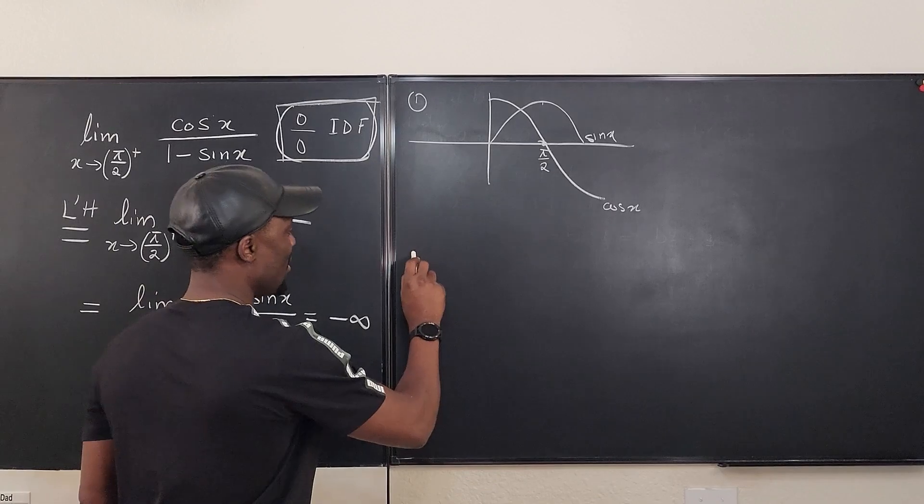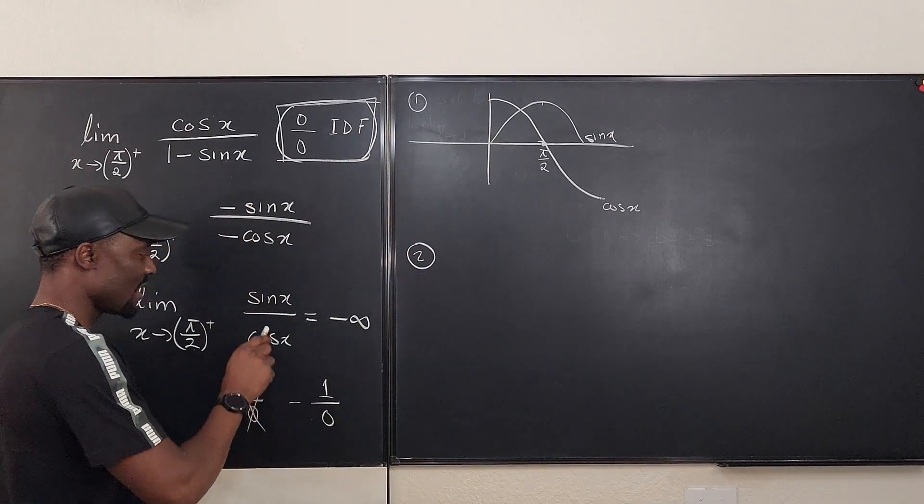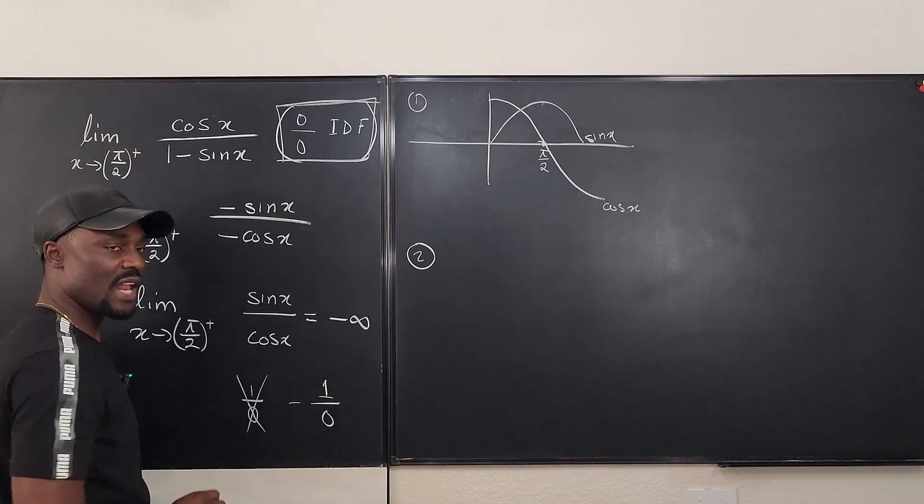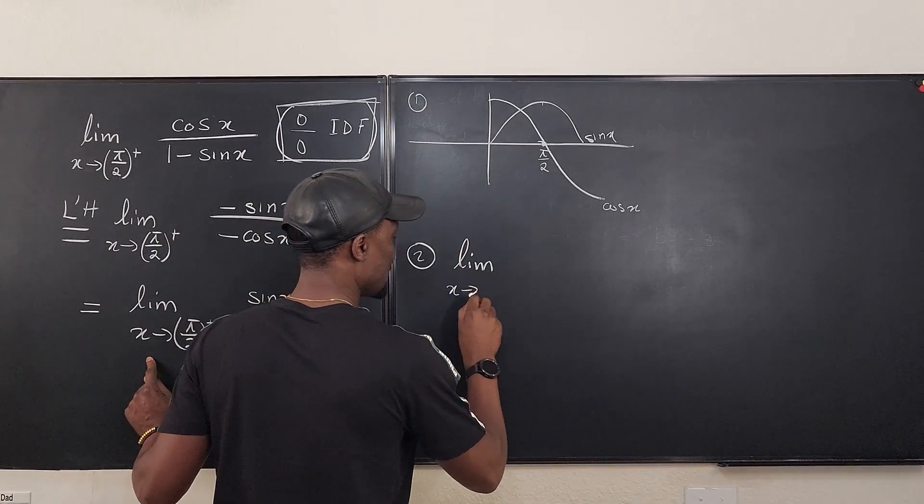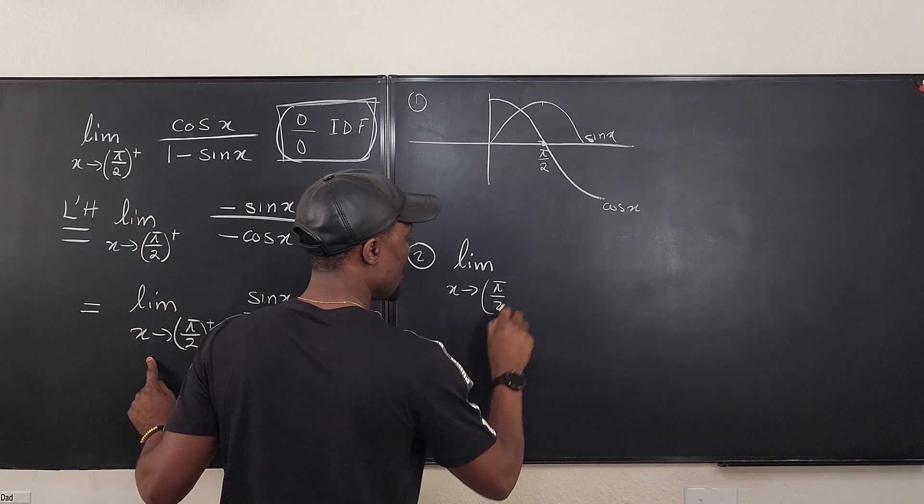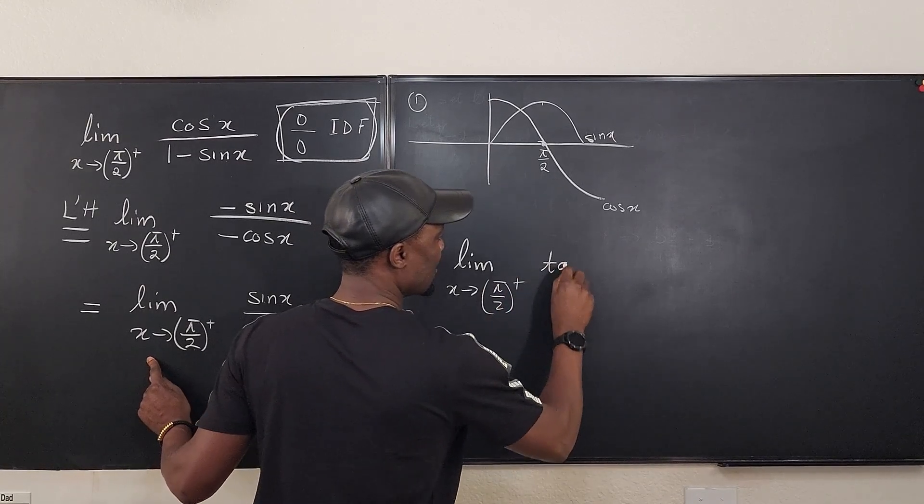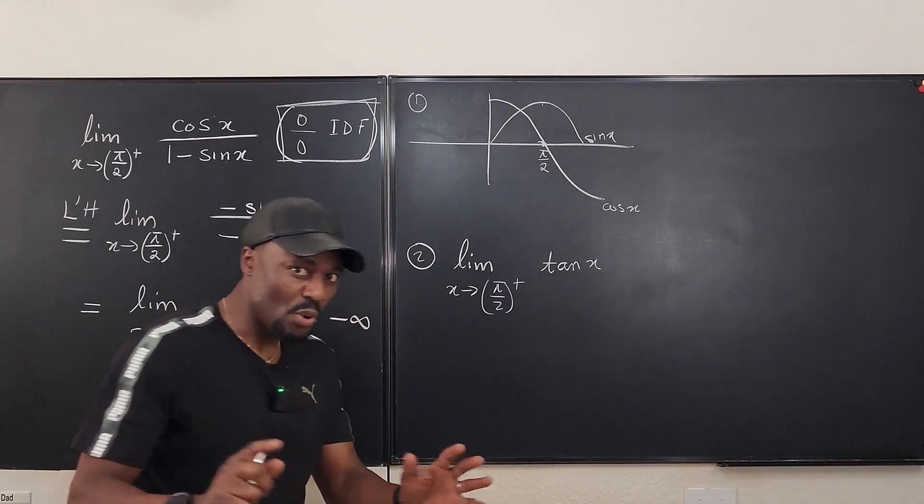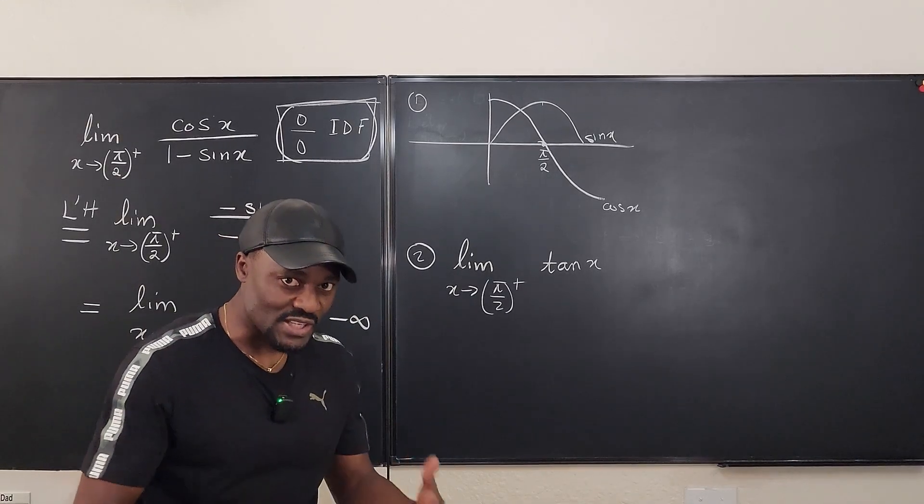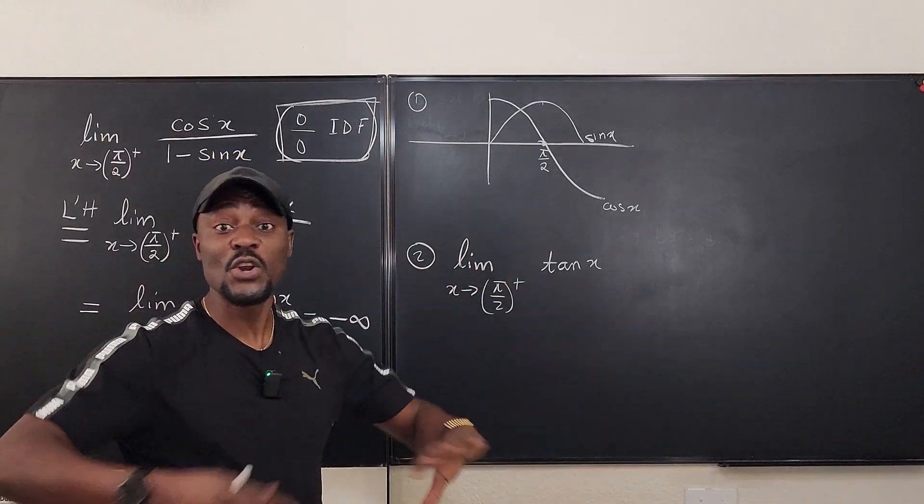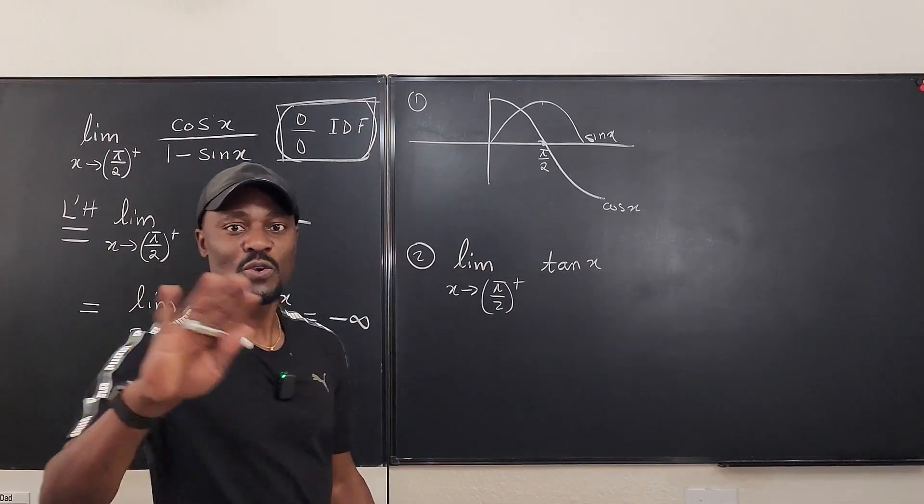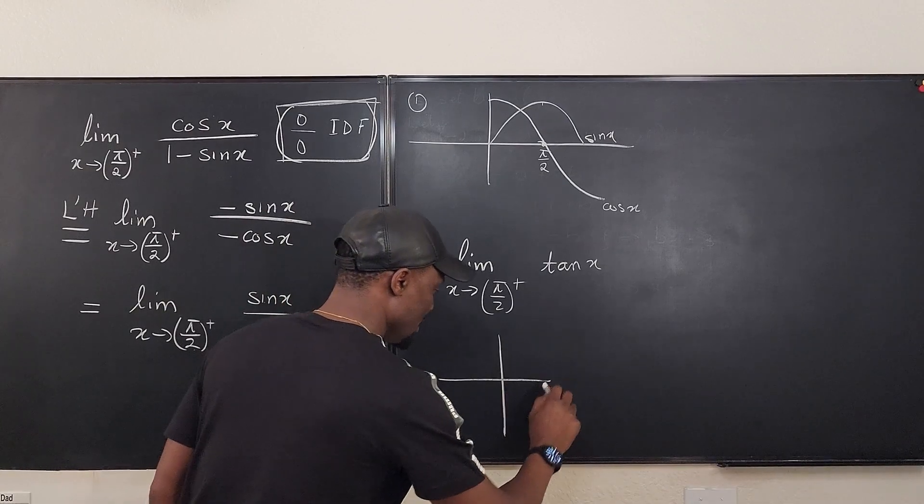Number two, sine x over cosine x is tan x. So it's as if you're saying this is the limit as x goes to pi over 2 from the right of tan x. It is also important that you know how to sketch the graph of tan x. In fact, let's even say you don't know how to sketch the graph of tan x. Do your four quadrant kind of analysis.